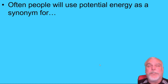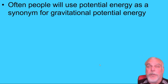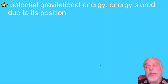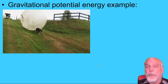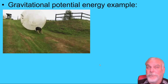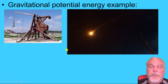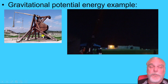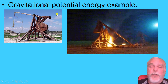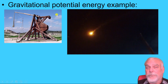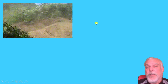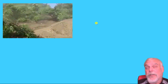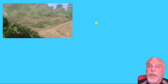Often people use 'potential energy' as a synonym for gravitational potential energy. Gravitational potential energy is defined as energy stored due to an object's position — an object will be pulled by gravity, causing it to fall and speed up. Examples include a ball rolling down a hill, a trebuchet (where the heavy basket falls, making the arm swing and throw the object), and a landslide. Even a tree sitting on a hill has potential energy — if the hill gives way, the tree will go down.